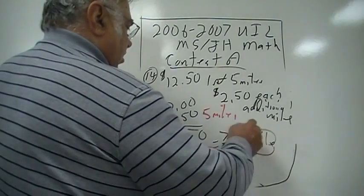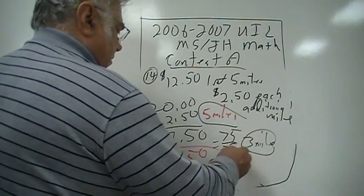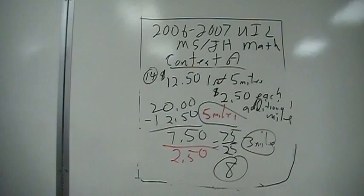So you get 3 miles there and 5 miles here so that's a total of 8 miles that you can go with $20.